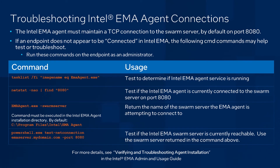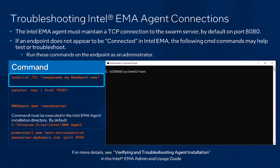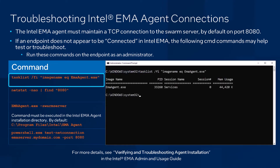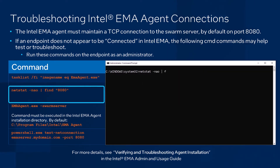Next, let's take a moment to talk about the Intel Emma agent. Once you've installed it on an endpoint, the agent must be able to maintain a TCP connection to the swarm server by default on port 8080. Here, we've got some commands you can run on an endpoint to help troubleshoot Emma agent connectivity issues if the endpoint does not appear to be connected. First, this task list command can help determine whether the Intel Emma agent service is actually running. Next, this netstat command can test if the Emma agent is currently connected to the swarm server on port 8080.